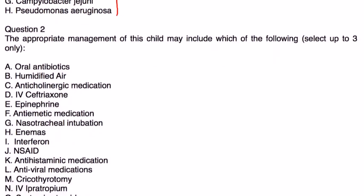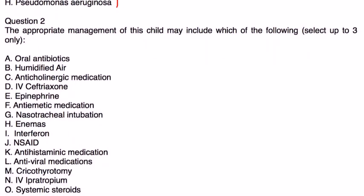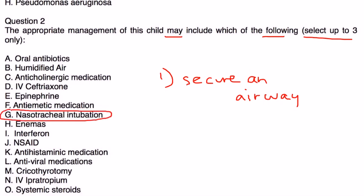Next question. The appropriate management of this child may include which of the following select up to three? Well, the first thing you want to do is secure an airway, without a doubt. And securing an airway in a child, especially with stridor, you want to secure an airway as soon as possible, immediately with a nasotracheal tube, nasotracheal intubation. So that's choice G.